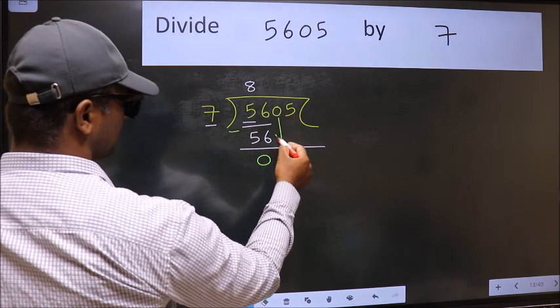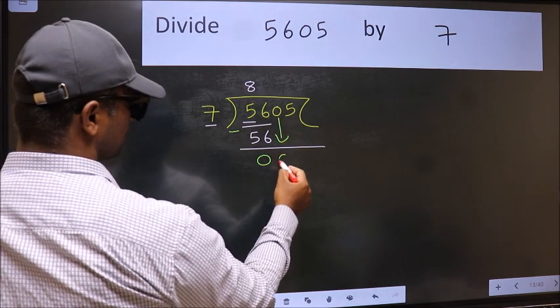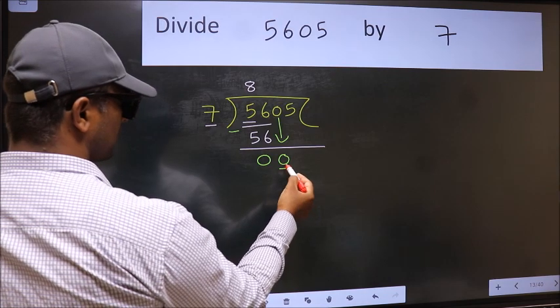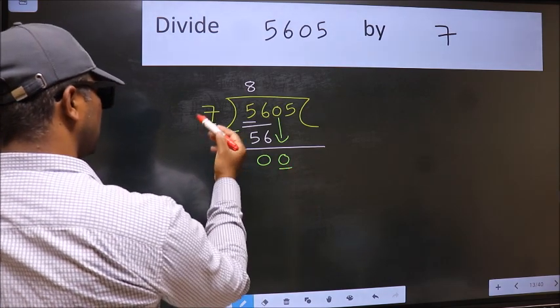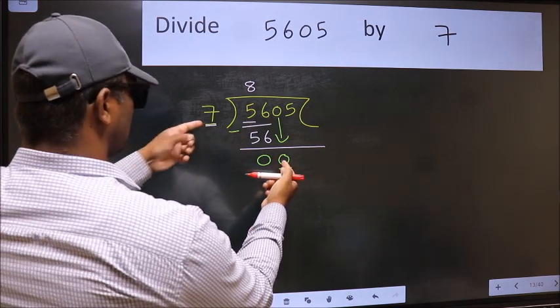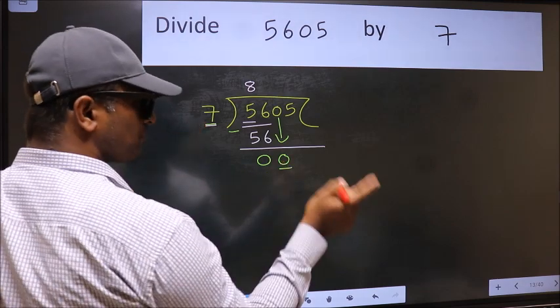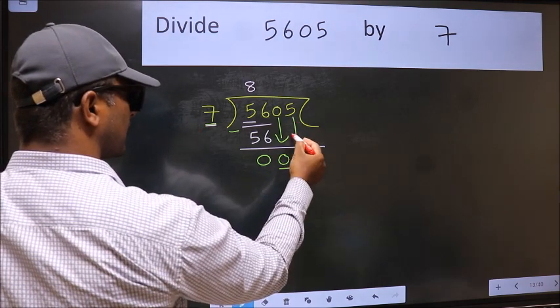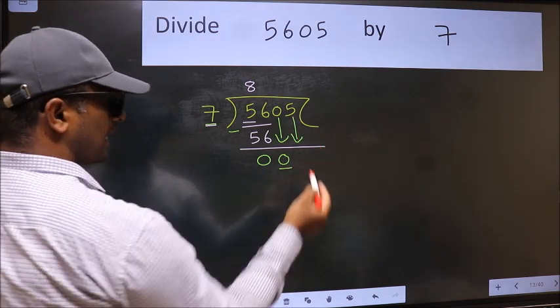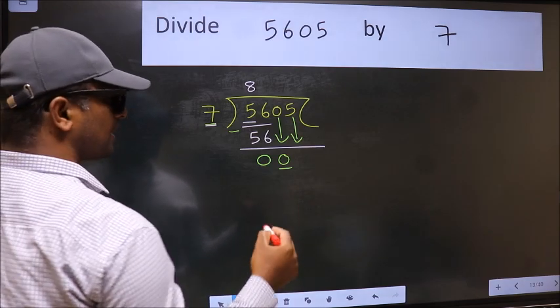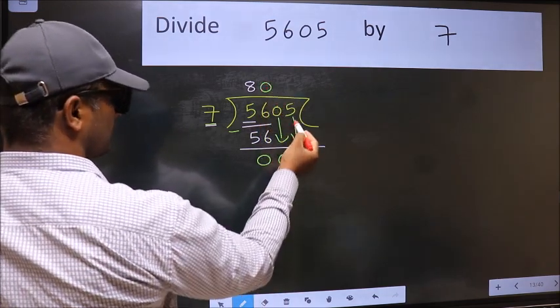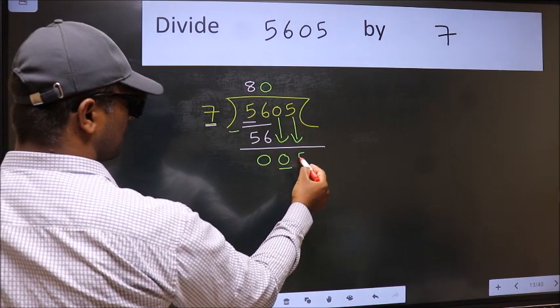After this, bring down the beside number. So, 0 down. Now here we have 0 and here 7. 0 is smaller than 7, so we should bring down the second number. And the rule to bring down the second number is we should put 0 here. Then only we can bring this number down.